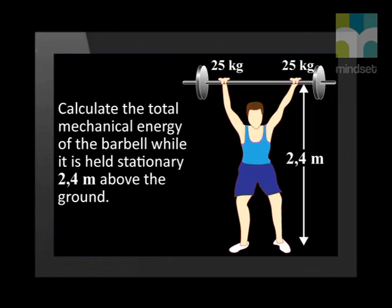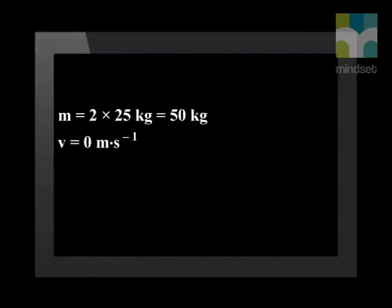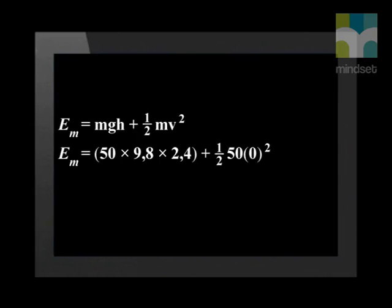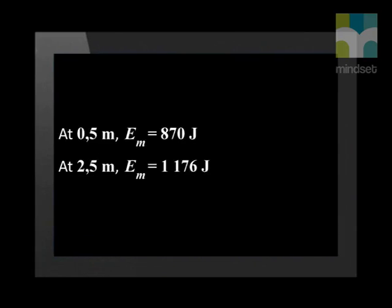Let's see what the total mechanical energy is when the weightlifter reaches the highest point and holds the barbell above his head. The height is 2.4 meters above the ground. The mass is still 50 kilograms, but the velocity is 0. Substituting all values into the formula, the total mechanical energy at this point equals 1176 joules. As you can see, this is not the same as the total mechanical energy while he was lifting the barbell. We can conclude that the total mechanical energy was not conserved, and the weightlifter put energy into the system as he lifted the weights up.